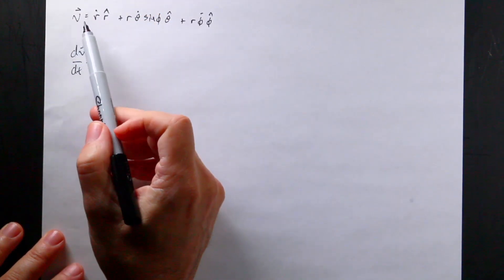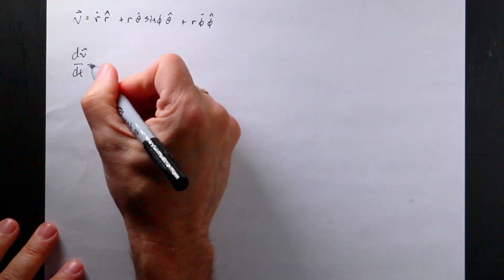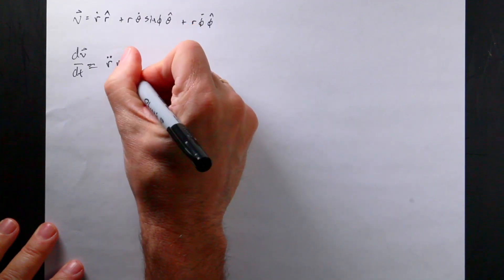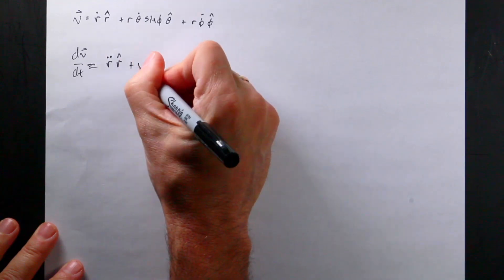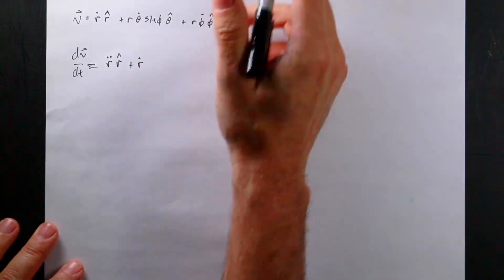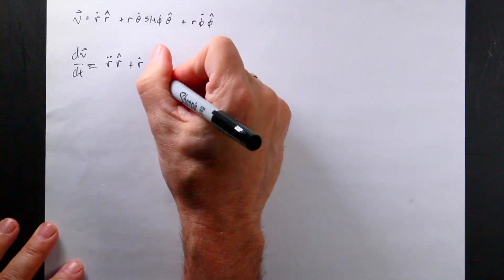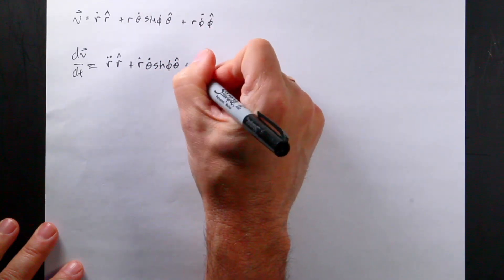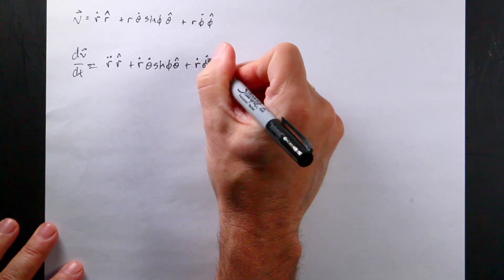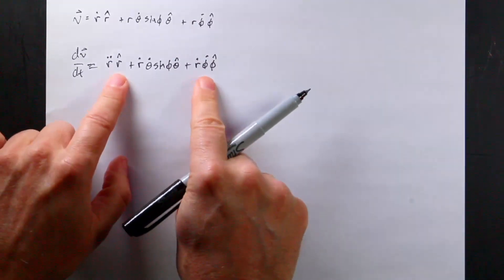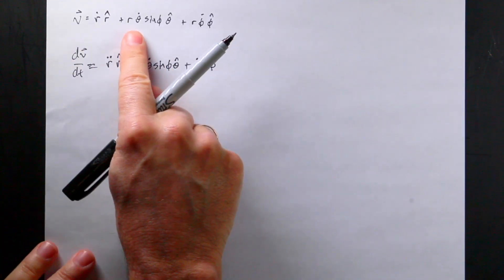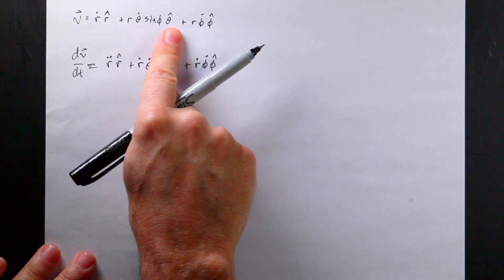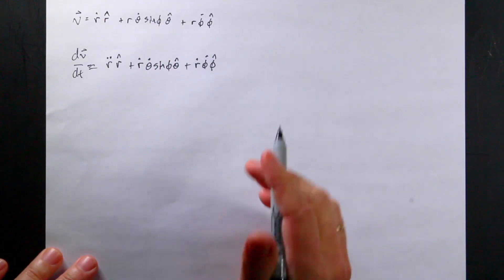Okay, let's start taking the derivatives. Remember, I have to include product rules throughout. There are four terms in that velocity expression that can all change with time, so this is going to get a little messy.